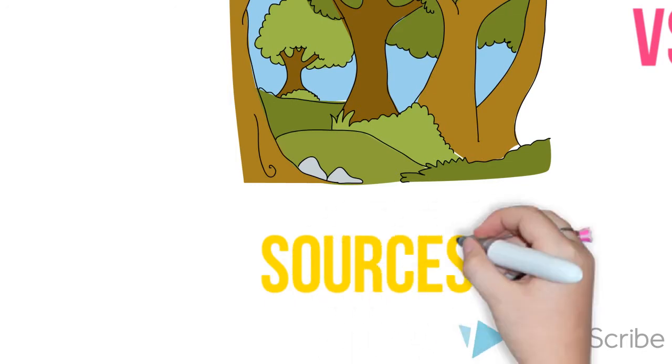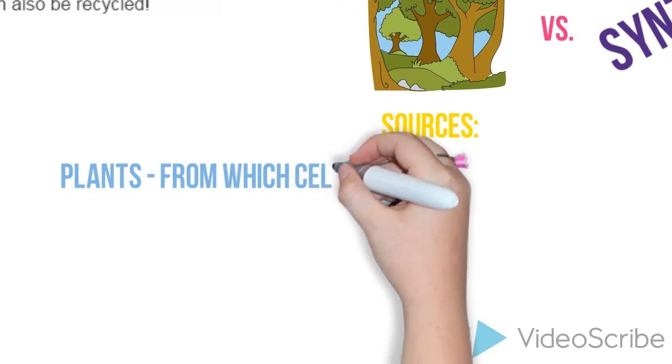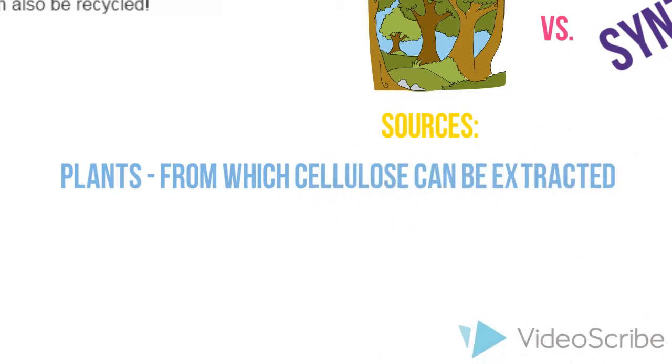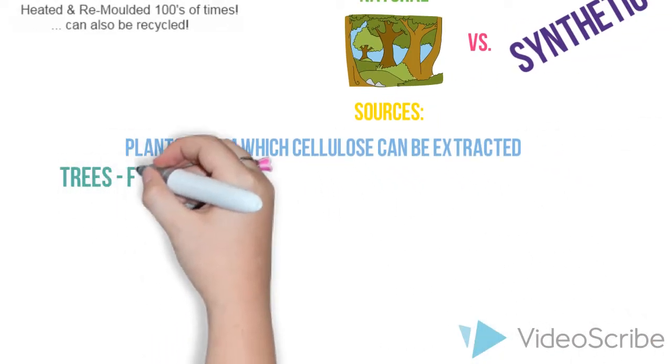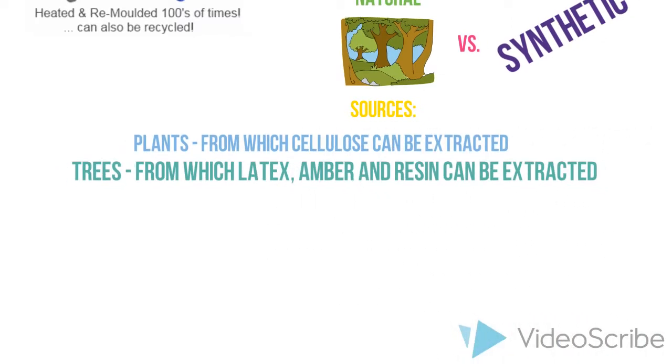Natural sources include plants, from which cellulose can be extracted, trees, from which amber, latex, and resin can be extracted.